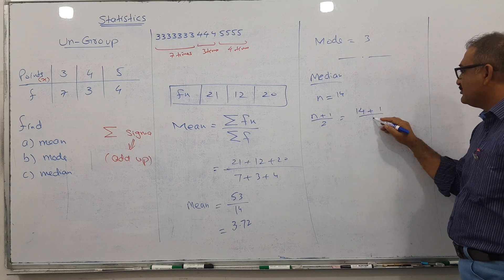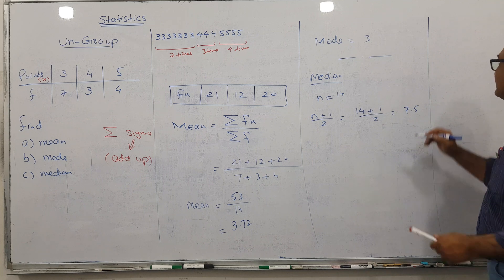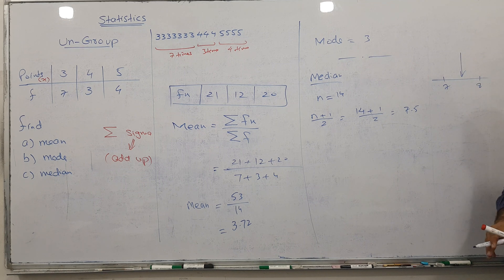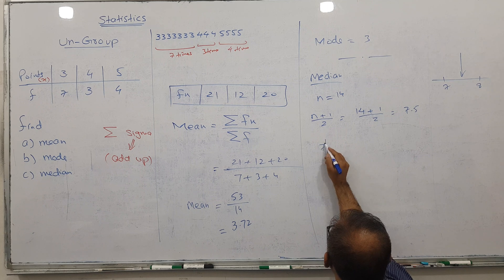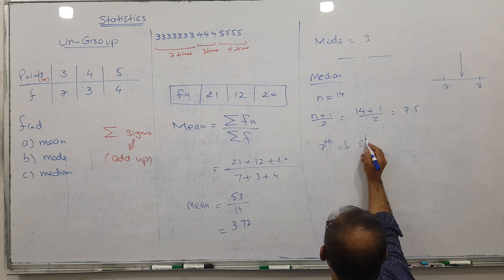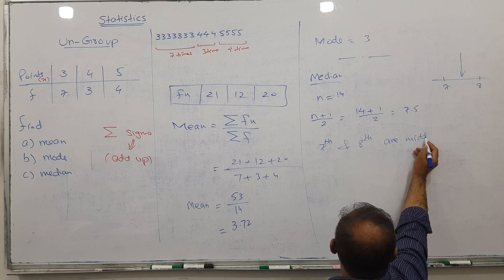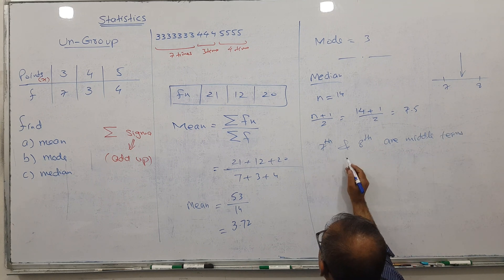7.5 means the 7th term and 8th term are in the middle. These are our middle terms.